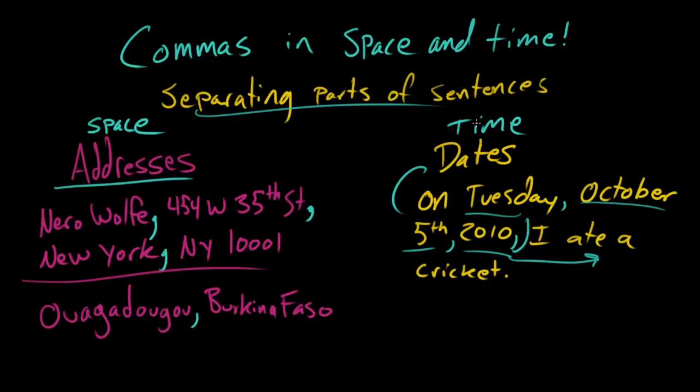So if you want to express a kind of complicated relationship in time or in space, you want to make sure a letter gets to a very specific place, you want to talk about a very specific city in a very specific country, you use commas. You want to talk about a very specific time, you use commas.